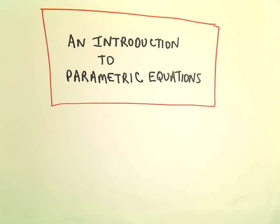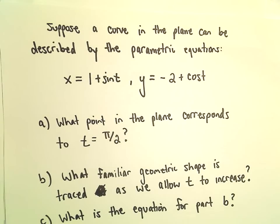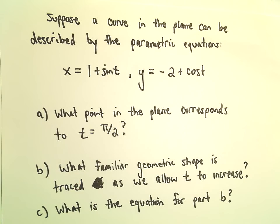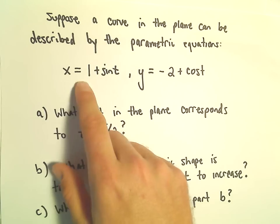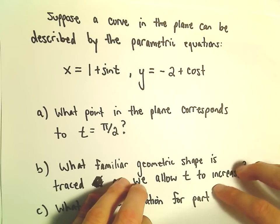All right, here we're going to look at a couple examples related to parametric equations. Suppose we've got a curve in the plane that can be described by the parametric equations: x equals 1 plus sine t, y equals negative 2 plus cosine t.